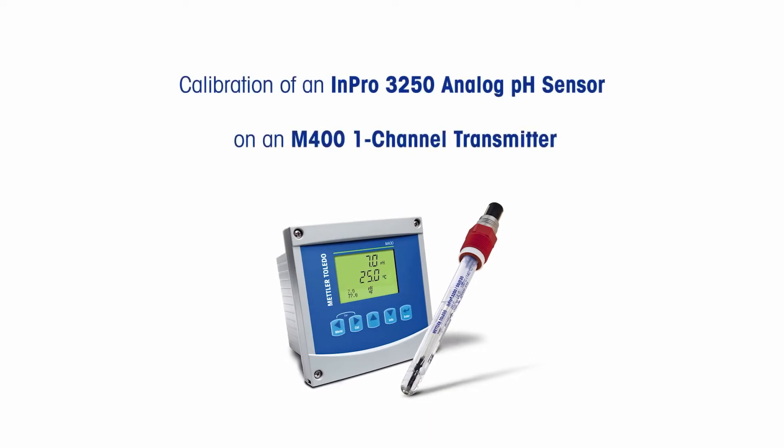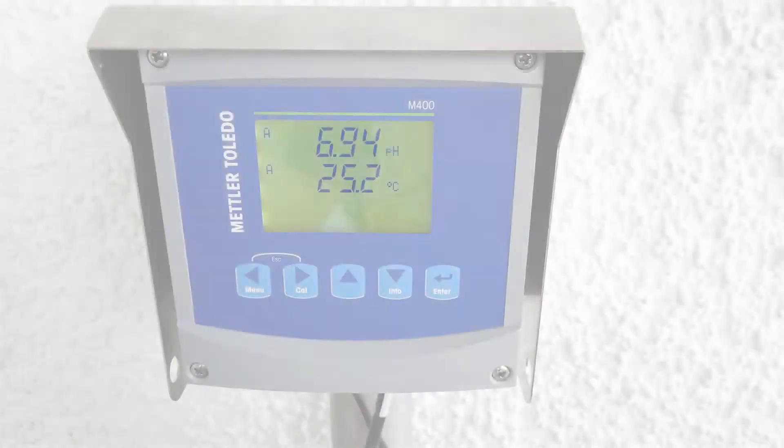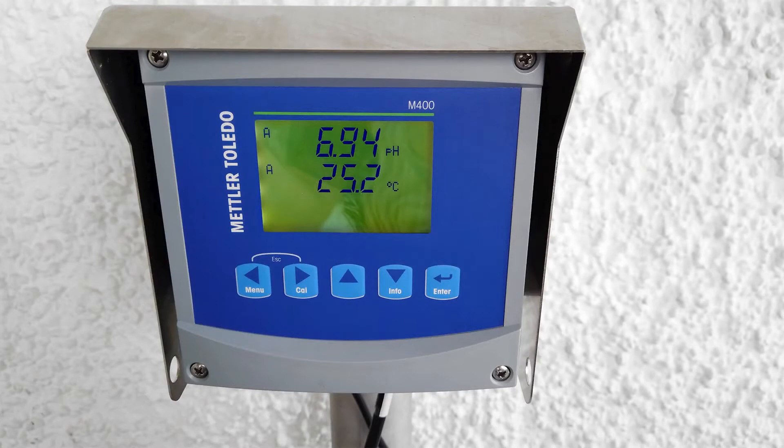Here's how to do a two-point calibration on a Mettler Toledo N-Pro 3250 analog pH sensor using an M400 one-channel transmitter. This M400 model was produced from 2008 to 2018.